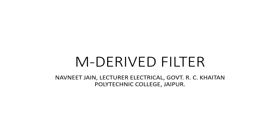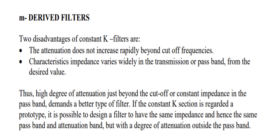Today I will explain M-derived filters. The two disadvantages of constant K type filters are: first, the attenuation does not increase rapidly beyond cutoff frequencies; second, the characteristic impedance varies widely in the transmission or passband from the desired value.